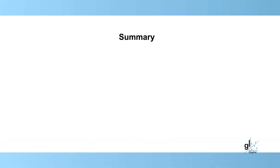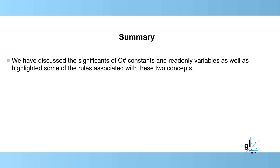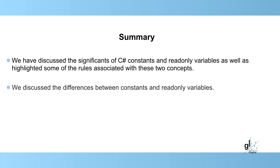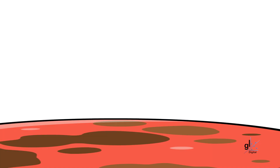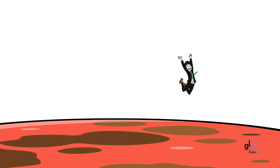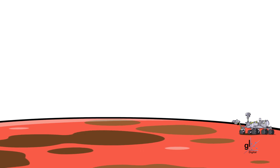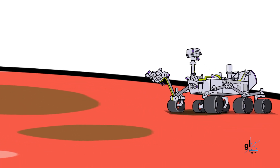We have discussed the significance of C# constants and read-only variables, as well as highlighted some of the rules associated with these two concepts. We discussed the differences between constants and read-only variables. Lastly, we developed a basic application demonstrating the appropriate use of a constant and a read-only variable. Please see the description below for details regarding any supplementary information. All code and related documentation can be downloaded from GitHub repositories — details are in the description below.